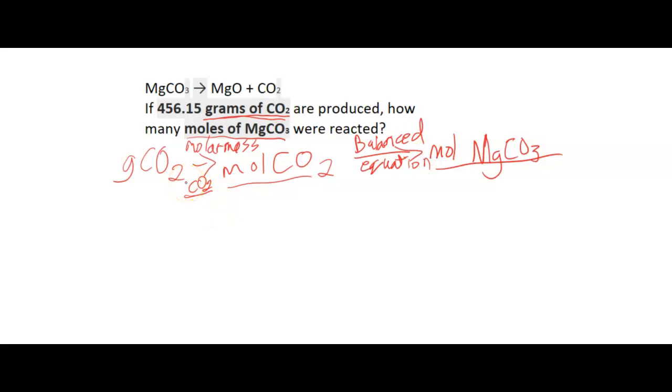Our molar mass of CO2, C, if we look on our periodic table, it's 12.0107 grams per mole. O, 15.9994 grams per mole. We have two of them, so we're going to multiply that one by two. So we're going to find the total here to find our molar mass. So we get our total of 44.0095 grams per mole.